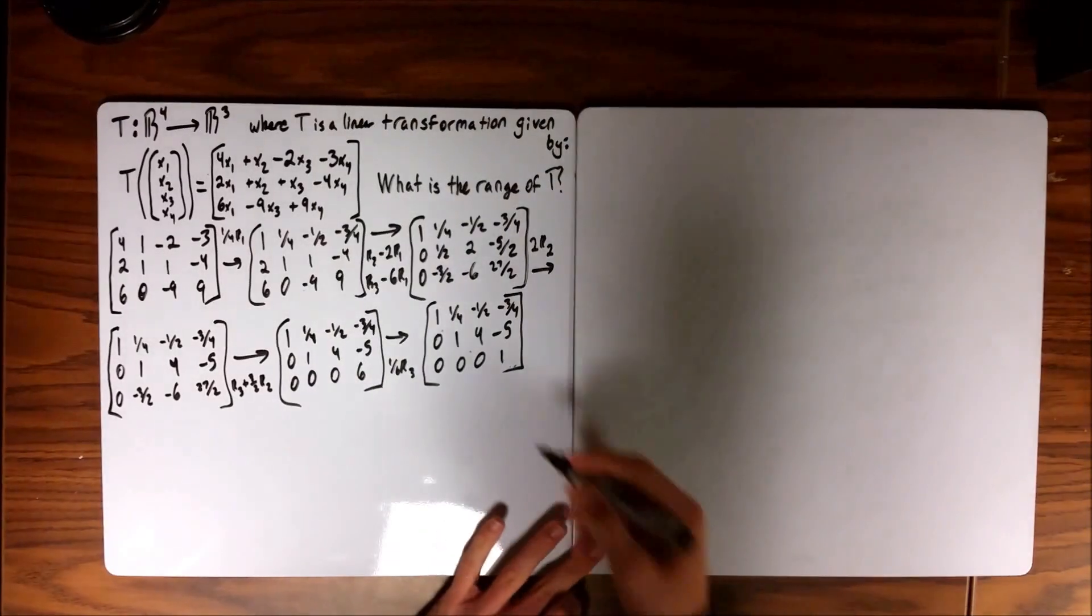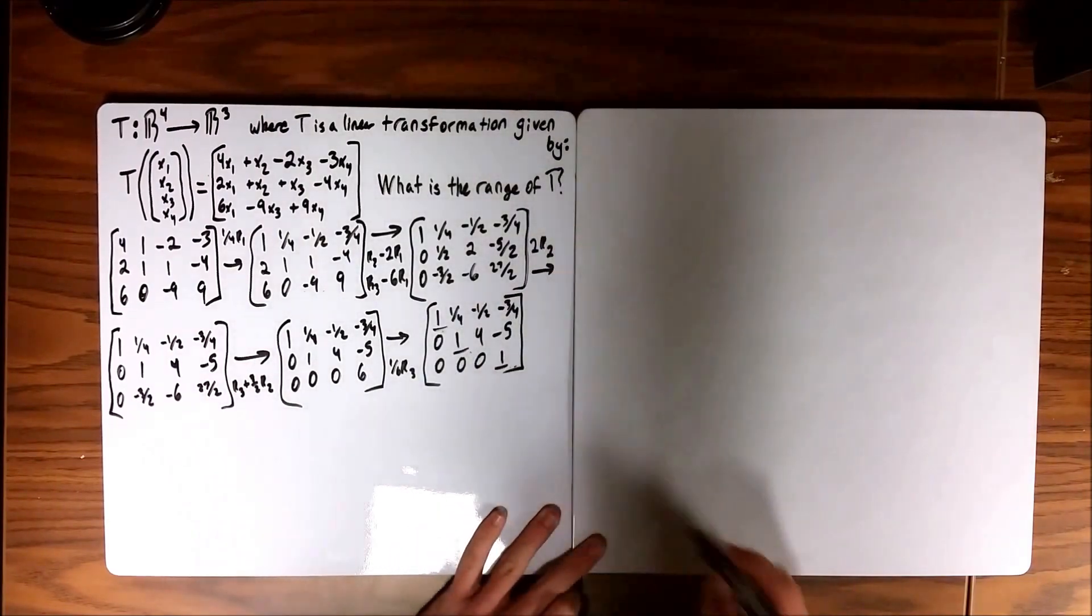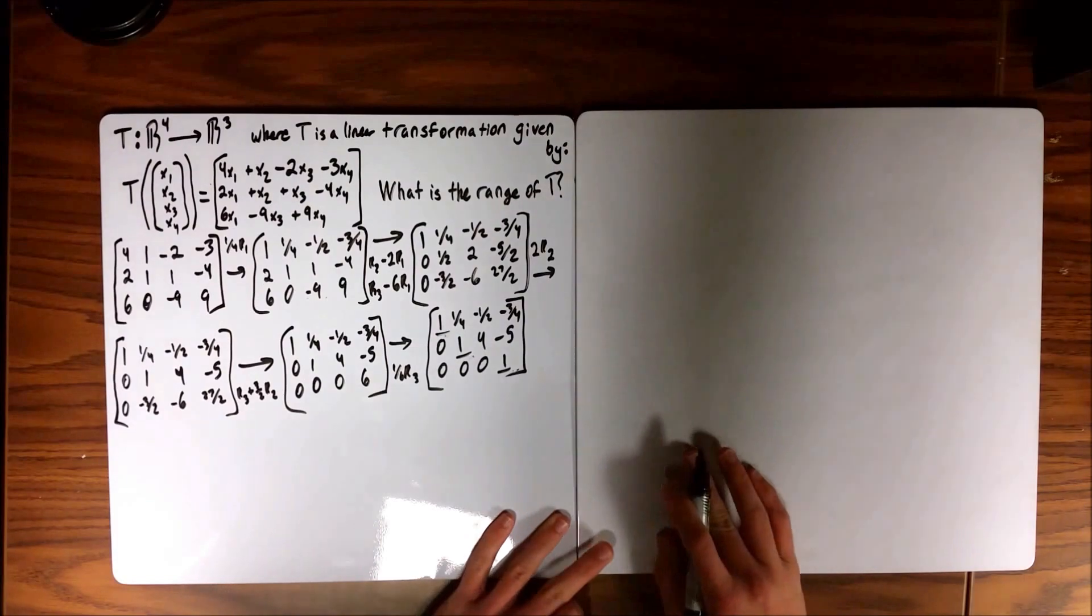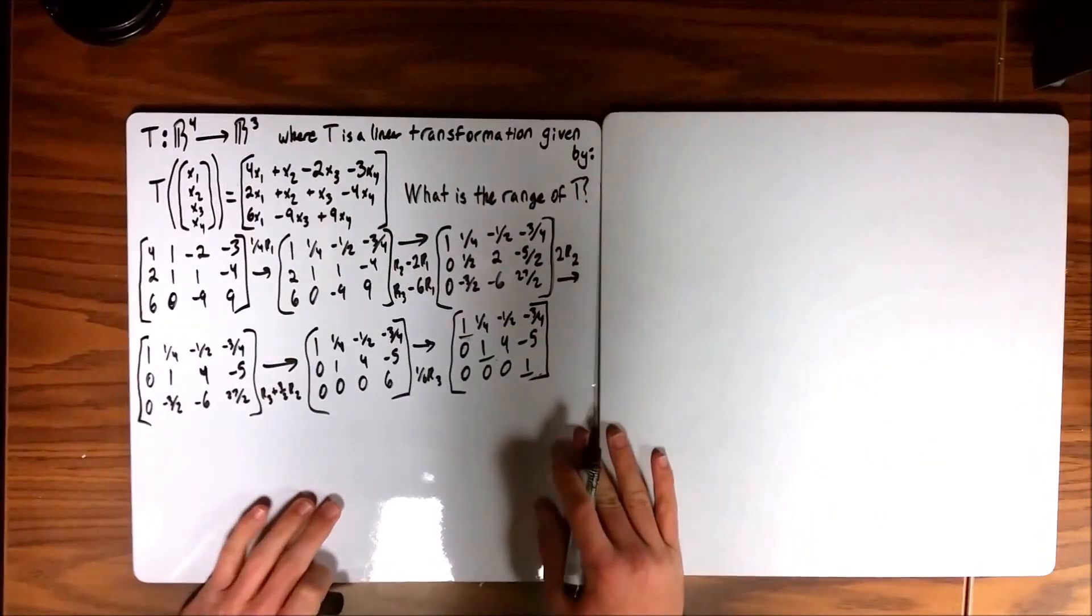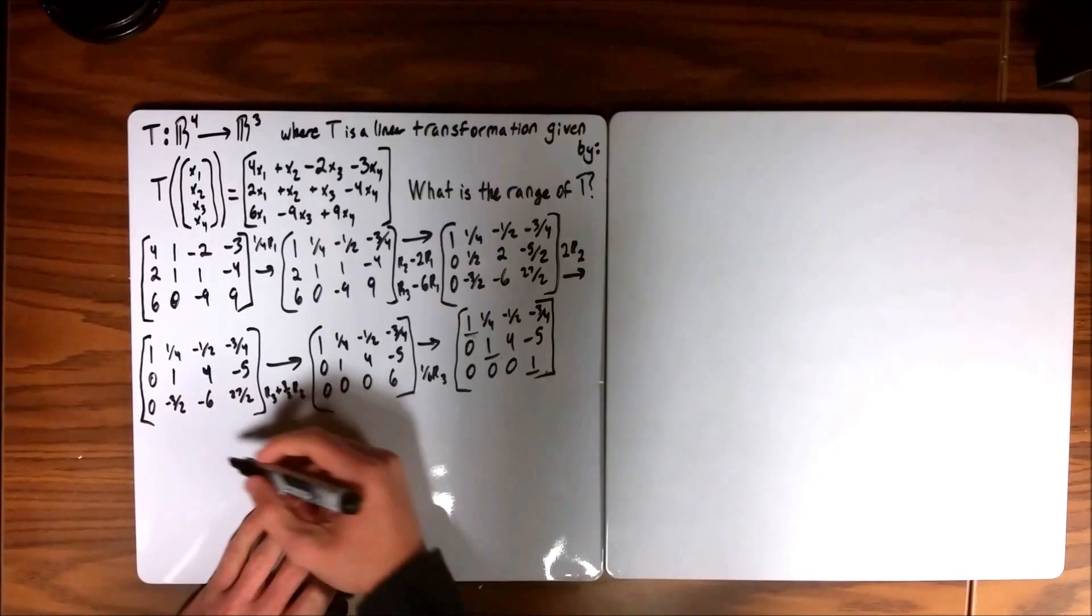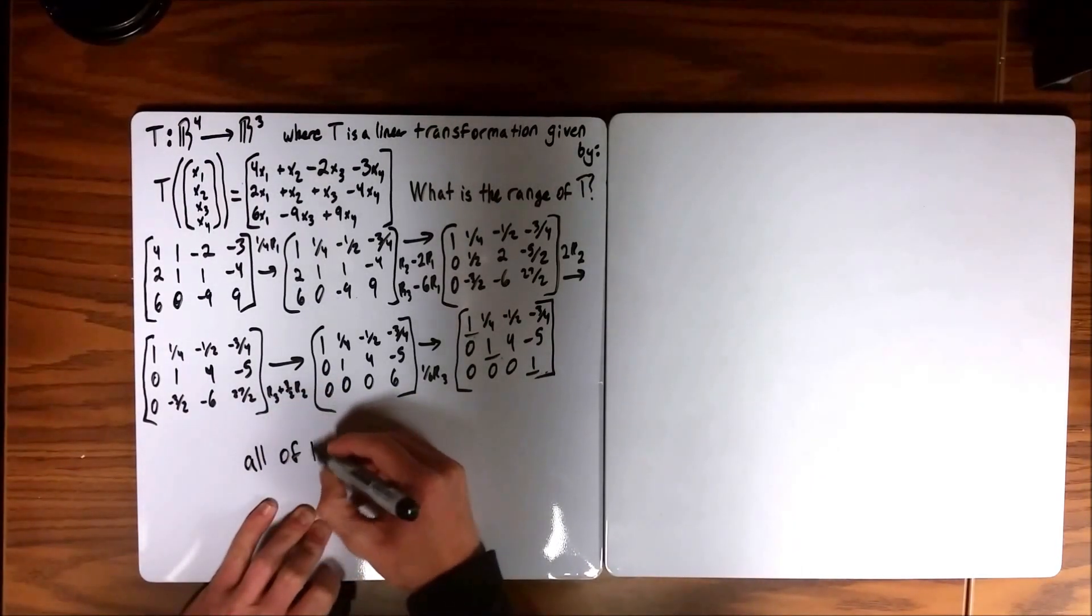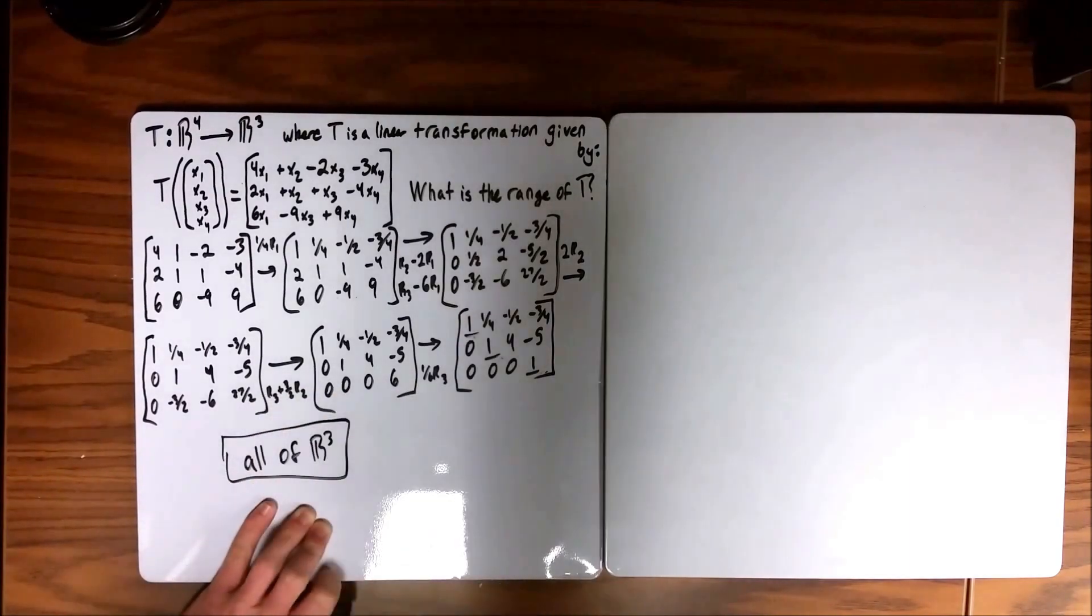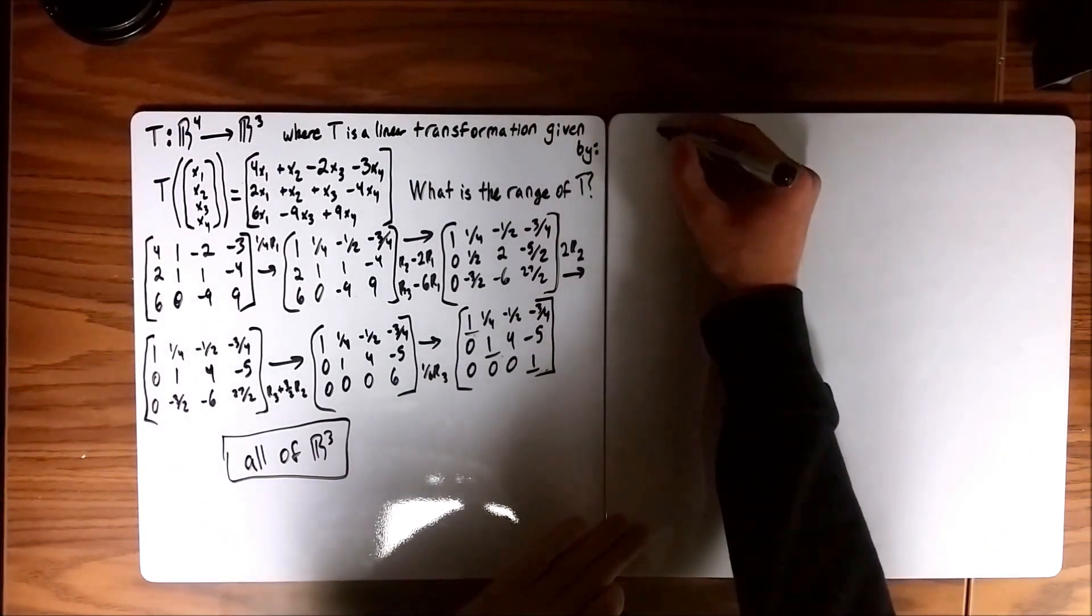And so from this we can see we have three pivotal ones, which means that there are of course three pivotal columns. And since there are three pivotal columns when the range is some subset of R3, that means that the range covers all of R3, speaking geometrically.